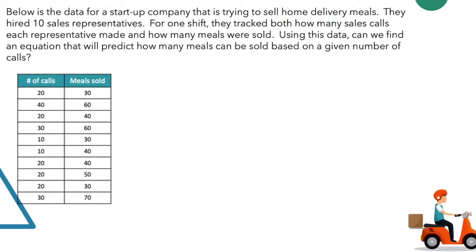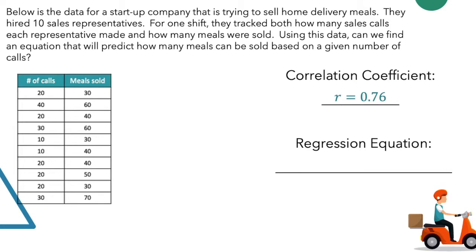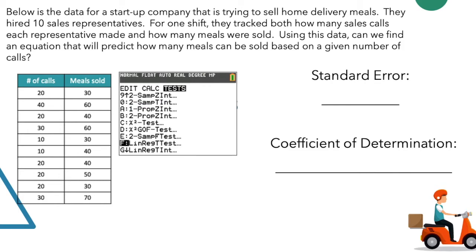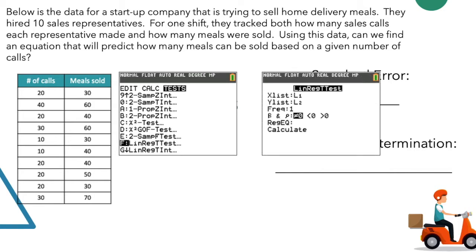So this is the problem we were working on before. We had found a correlation coefficient of 0.76, and we had a regression equation of y equals 1.18x plus 18.95. Now we need to find the standard error and the coefficient of determination. Go to stat, tests, and go all the way down to F — LinReg T test. Hit enter on that. Tell it that x list is list one, y list is list two.